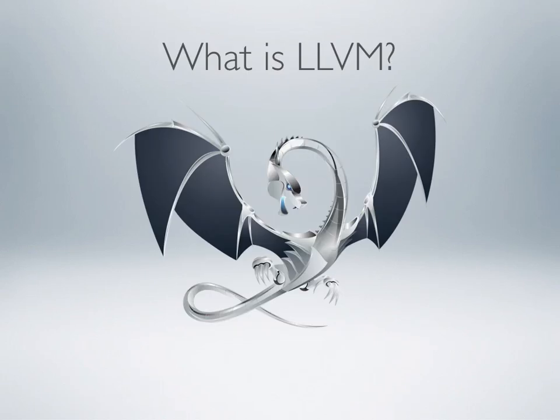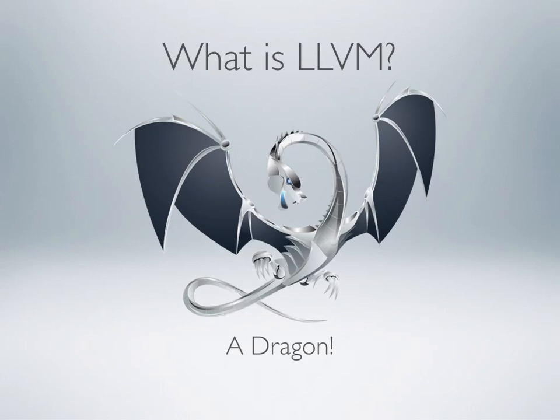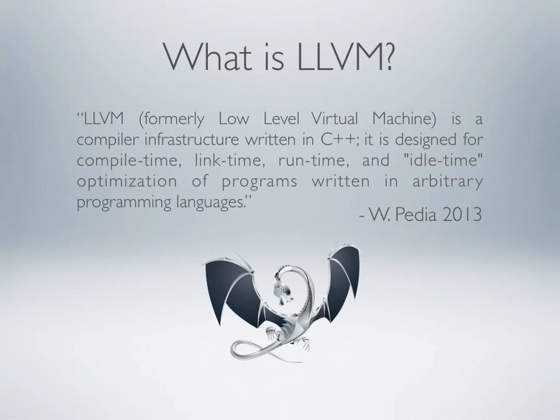What is LLVM? Formerly known as the Low-Level Virtual Machine, LLVM is a compiler infrastructure written in C++, designed for compile time, link time, run time, and idle time optimization of programs written in arbitrary programming languages. Essentially you could think of it as a translation layer to go between source code to pretty much any machine you could think of.